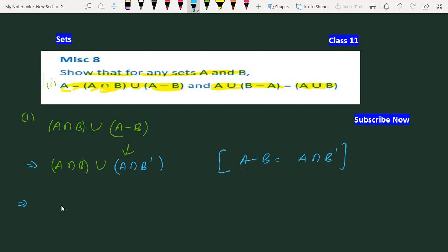After this, we will apply the distributive property. This is common in both, so we get A ∩ (B ∪ B').